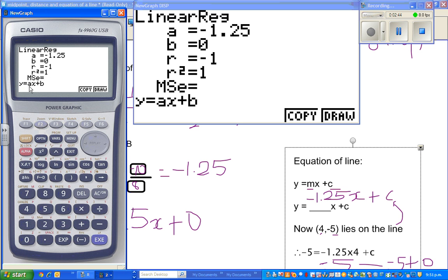They are telling me the equation is Ax plus B. The graphic calculator uses Ax plus B, where A is the gradient.